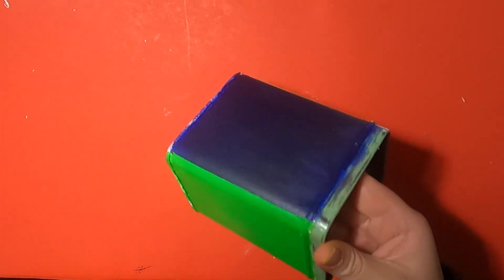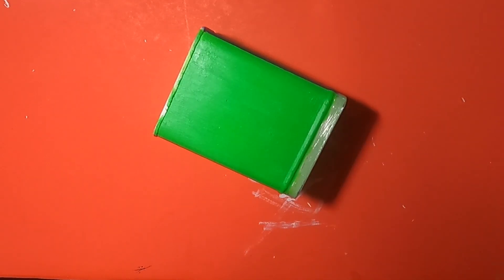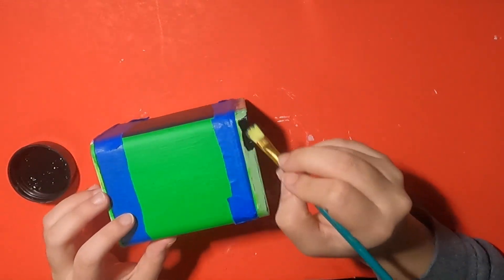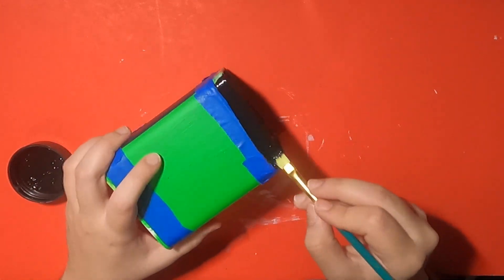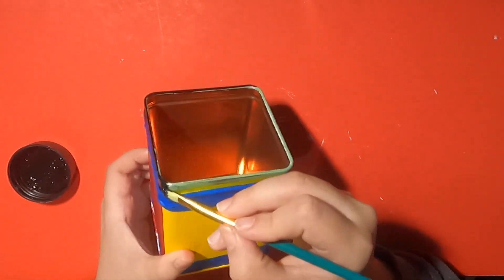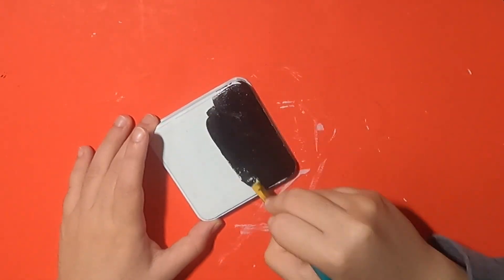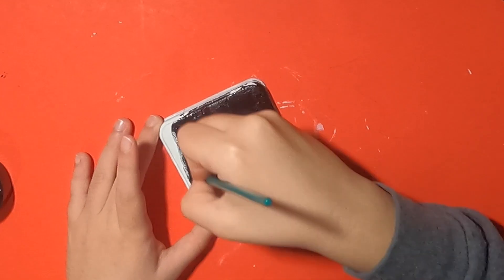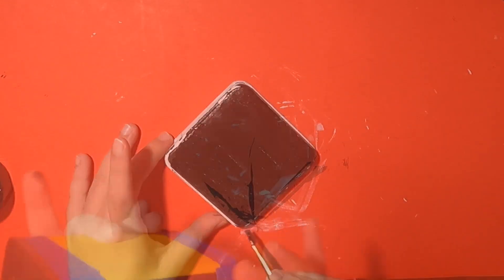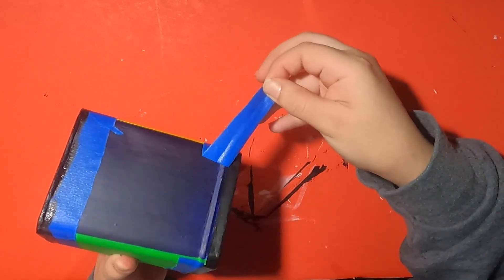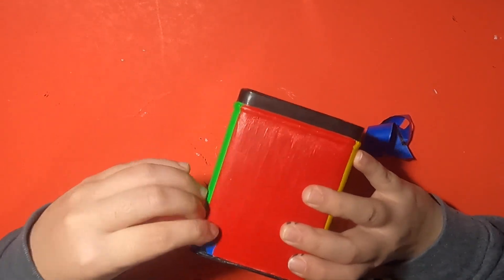Now that we're all done with that, check it out, look at those edges. I think everything's looking pretty nice. Now let's move on to painting all the parts that are going to be black, so that's the top of the tin, the bottom of the tin, and also the lid.